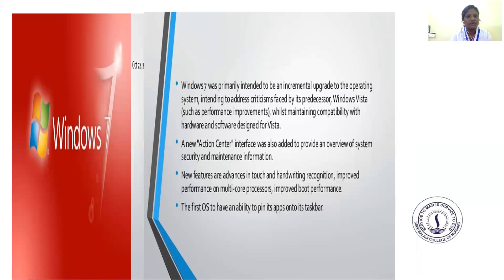Windows 7 was primarily intended to be an incremental upgrade to the operating system, intending to address criticism faced by Windows Vista, such as performance improvements while maintaining compatibility with hardware and software designed for Vista. A new Action Center interface was added to provide an overview of system security and maintenance information. New features include touch and handwriting recognition, improved performance on multi-core processors, and the first version to allow pinning apps to the taskbar.